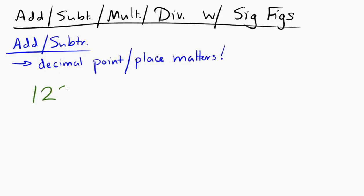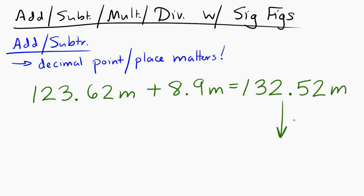Let's say 123.62 meters plus 8.9 meters. So if you just add the numbers together, you get 132.52 meters. But with correct sig figs, that would really be 132.5 meters.